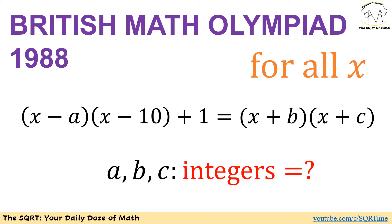In this problem, we have (x - a)(x - 10) + 1 equals (x + b)(x + c). We know that a, b, and c are integers. We also know that this equation is true for all x values. We are going to find possible values that we can have for a, b, and c.